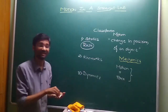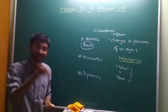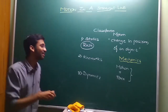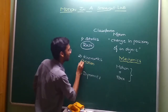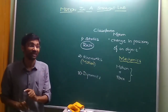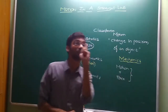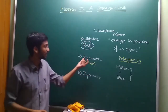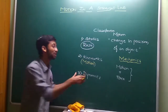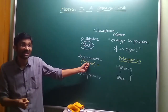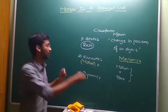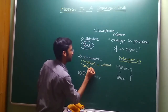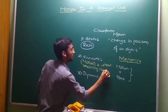The second branch is Kinematics. It is the branch of mechanics which deals with objects which are under motion. Here, motion is compulsory, but we study the body without considering the cause for it — without considering the cause for the motion.